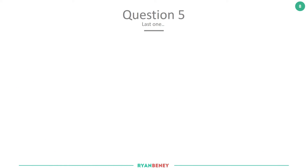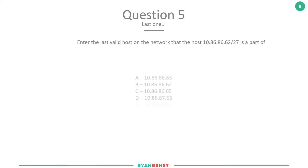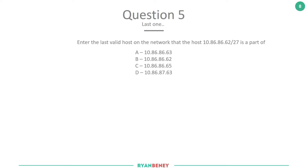Okay, the last question for this video - question five. Enter the last valid host on the network that the host 10.86.86.62/27 is part of. Is it: A) 10.86.86.63, B) 10.86.86.62, C) 10.86.86.65, or D) 10.86.87.63? Go ahead, pause the video, do your calculations, and when you're ready press play.